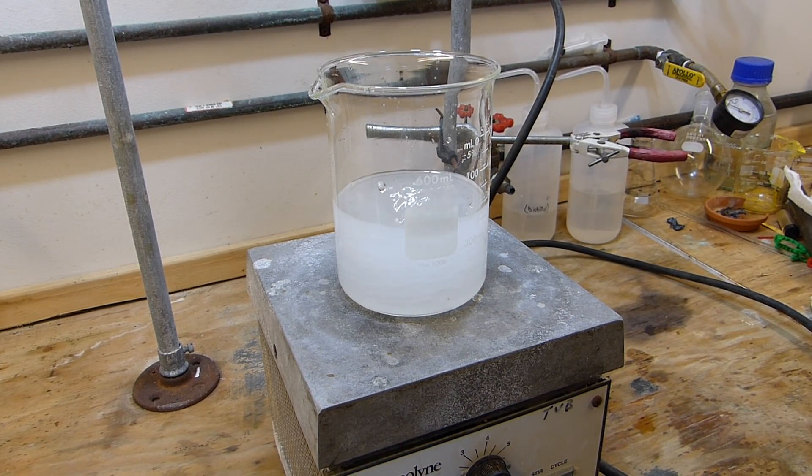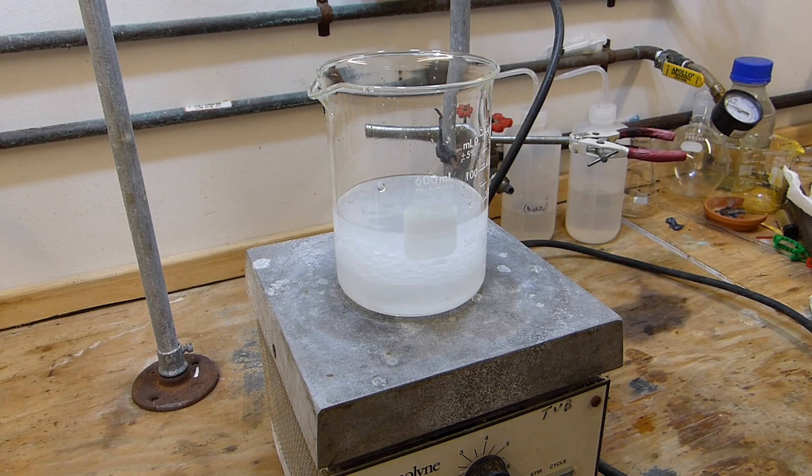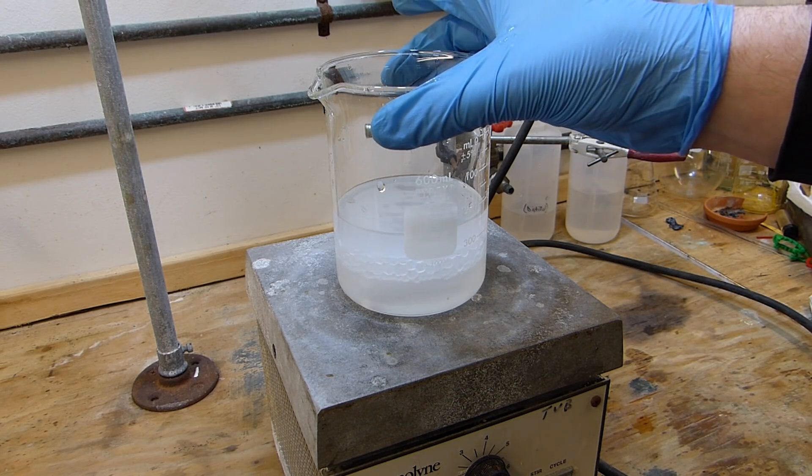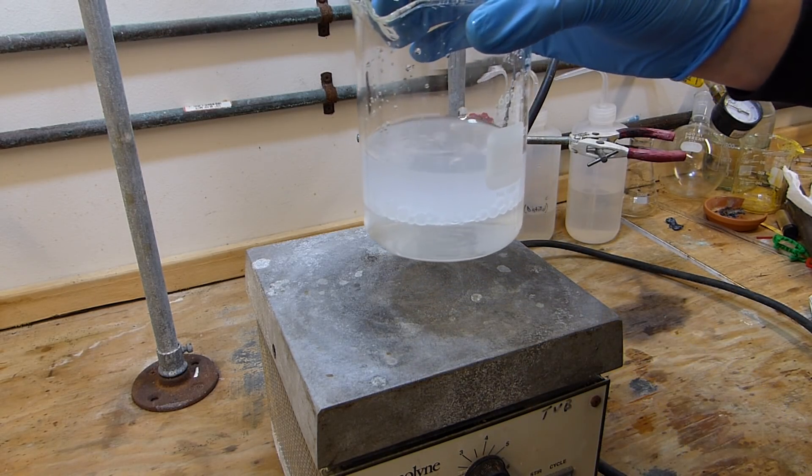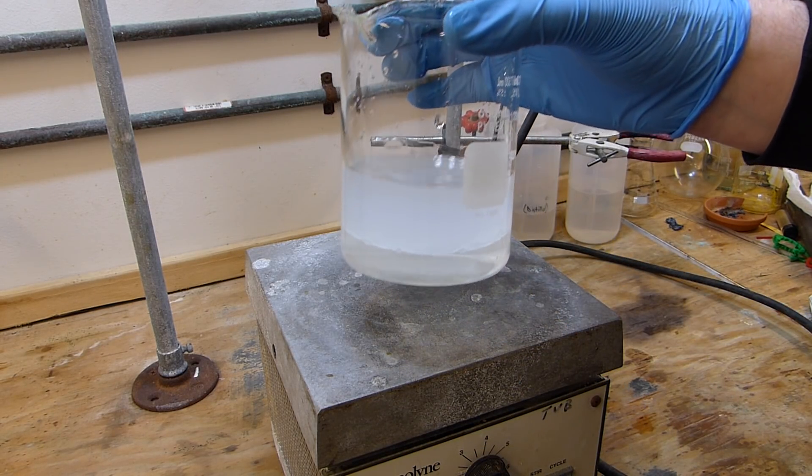This has been stirring for about five minutes. I'm going to turn the stirring off and let everything settle out. While that's occurring I'm going to set it aside and then set up the apparatus for the Dean-Stark trap and everything that we'll need to make the sulfonic acid.